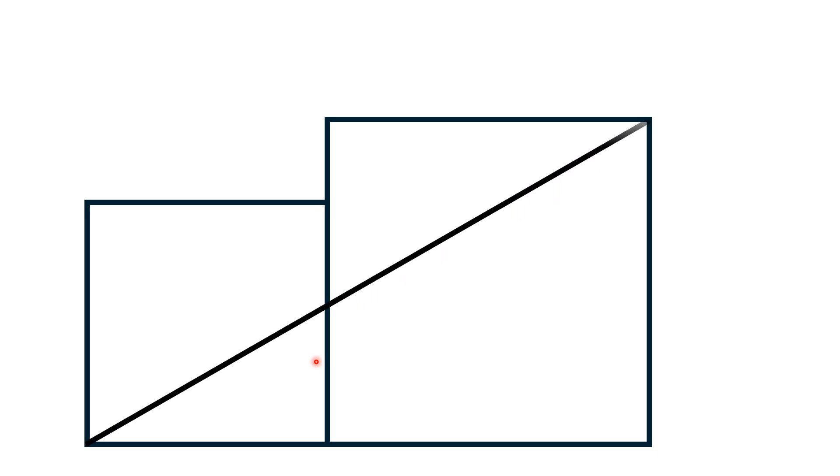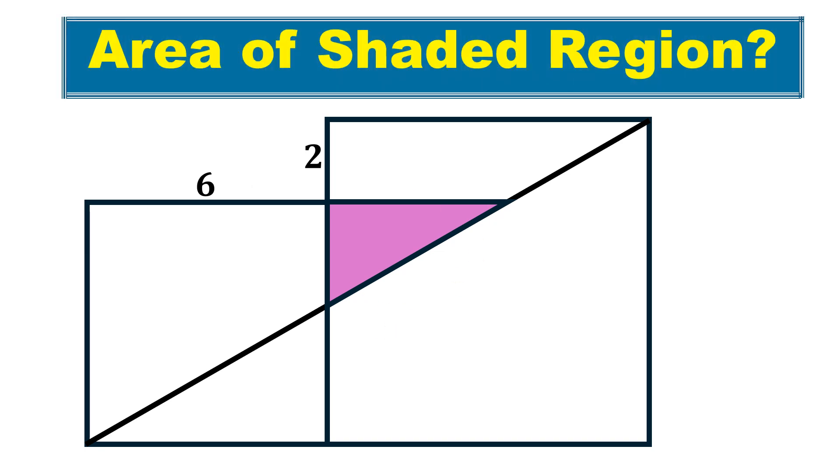Hello everyone, in this video, given is a larger square and a smaller square attached with this square in such a way that one of their side is overlapping to each other. Here, this line segment is drawn from the vertices of two different squares. If this smaller square has side length 6 and this particular length is 2 units, then by using this limited data, we have to find this shaded area.